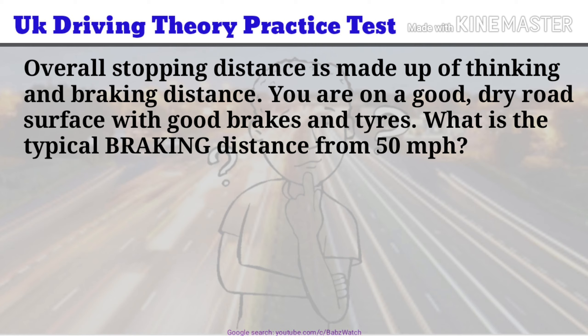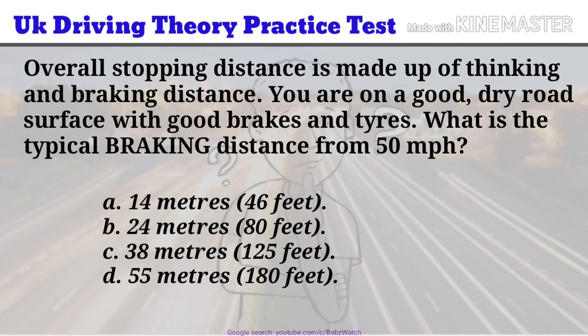UK Driving Theory Practice Test Question 19 of 50. Overall stopping distance is made up of thinking and braking distance. You are on a good dry road surface with good brakes and tyres. What is the typical braking distance from 50 miles per hour? a. 14 metres (46 feet). b. 24 metres (80 feet). c. 38 metres (125 feet). d. 55 metres (180 feet). The correct answer is c.